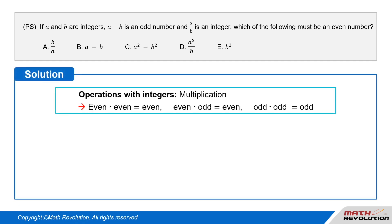Solution. Multiplication and addition or subtraction are the most important operations with integers. Multiplication of any integer by an even integer gives an even integer, whereas multiplication of two odd integers gives an odd integer.